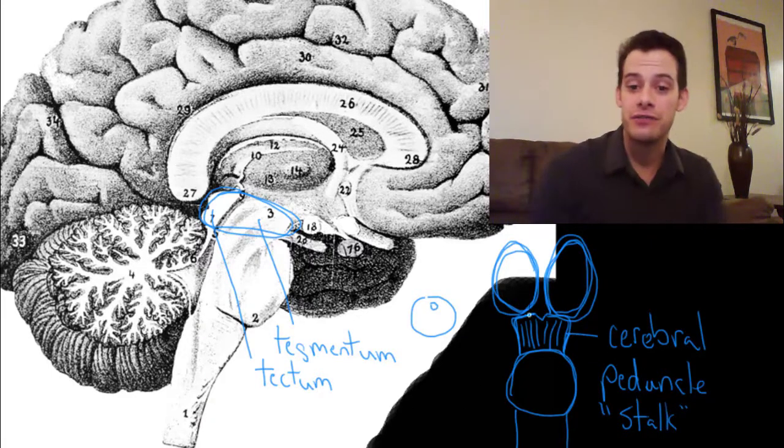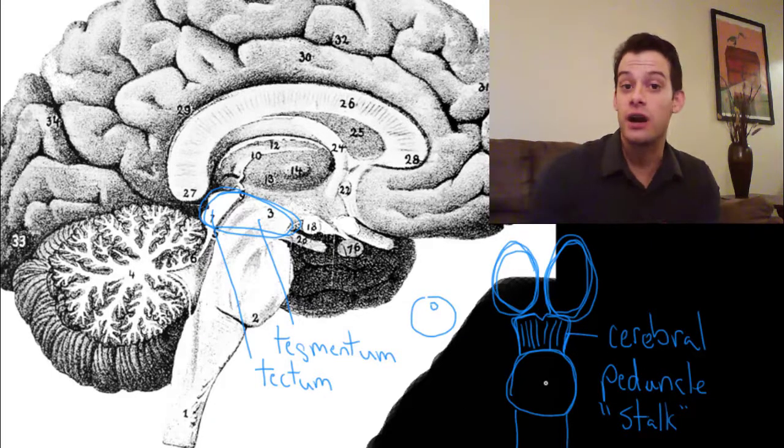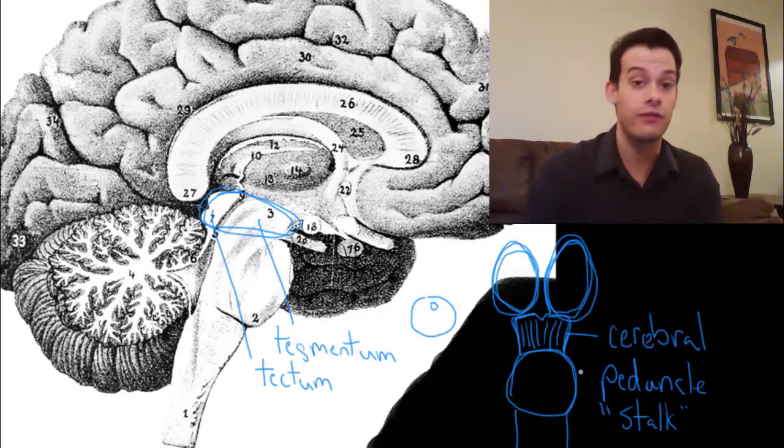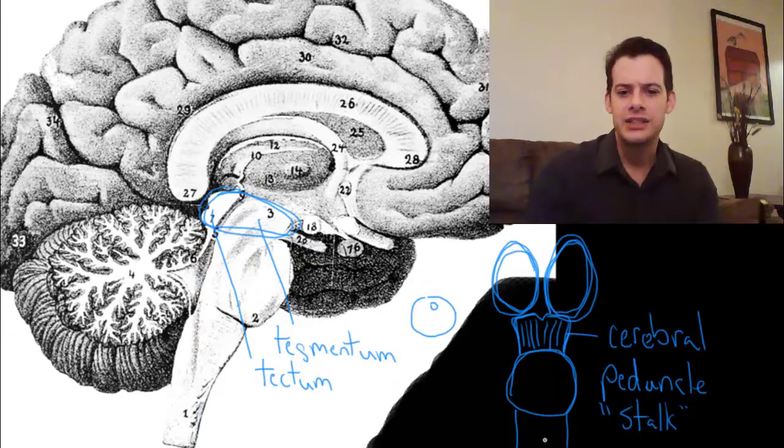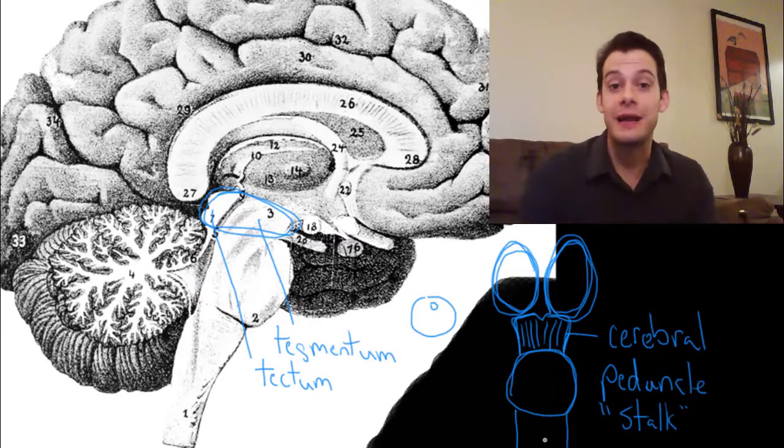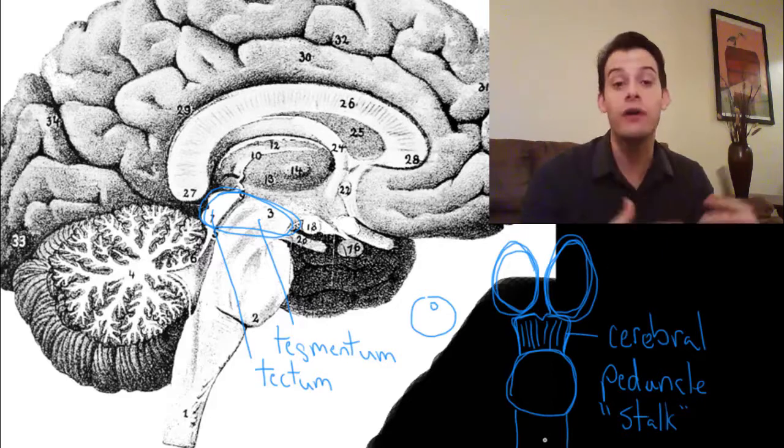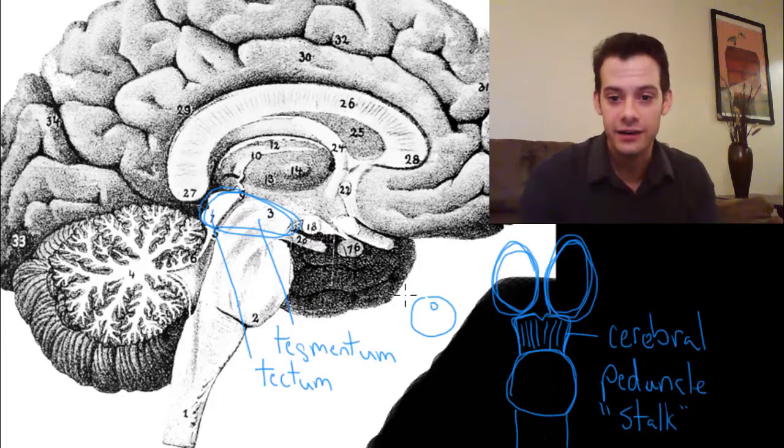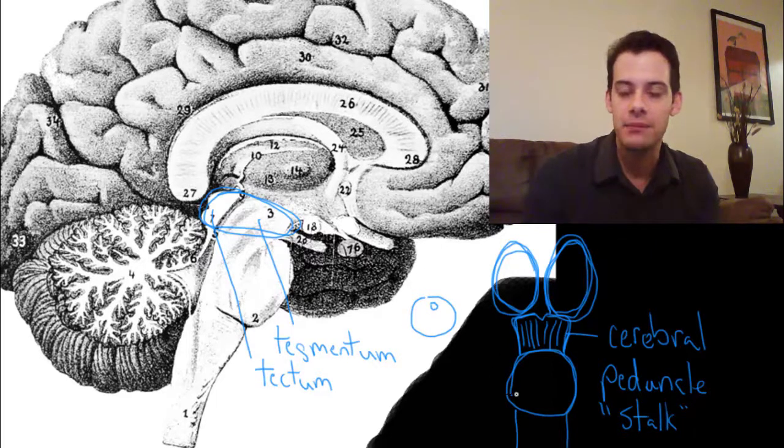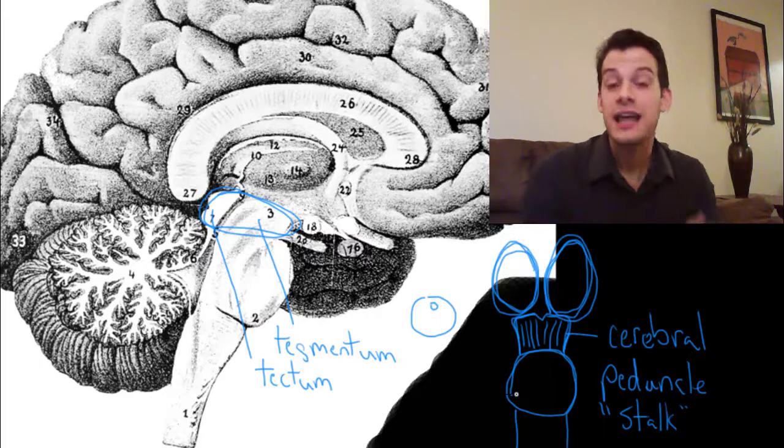And the second is that peduncle means stalk. And I like this analogy for thinking about this. It's like the stalk of a flower. You could call the stalk of a flower a peduncle. So the cerebral peduncle here is leading up to the thalamus and it's sort of the point where the brain begins to flower. Where we have all of this complexity emerging from this sort of simple brain stem that was leading up to it. And I like this analogy.